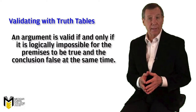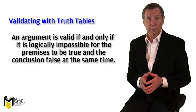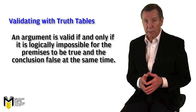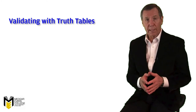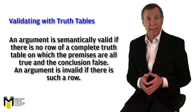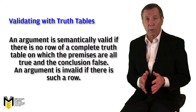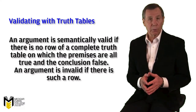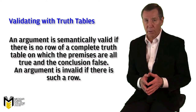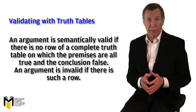An argument in English is valid if, and only if, it is logically impossible for the premises to be true and for the conclusion to be false at the same time. We can define an argument as semantically valid in sentential logic if there is no row of a complete truth table on which the premises are all true and the conclusion is false. An argument is invalid if there is such a row.